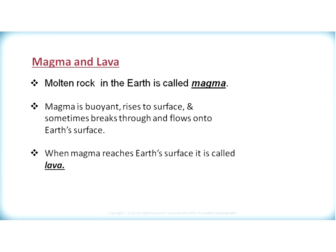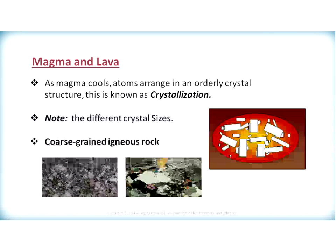Both magma and lava, when solidified, will form igneous rocks. As magma cools, atoms arrange in an orderly crystal structure, and this is known as crystallization. Looking at the diagram to the right, we have a round, reddish-yellowish area which represents magma, and crystals will tend to form within the magma.